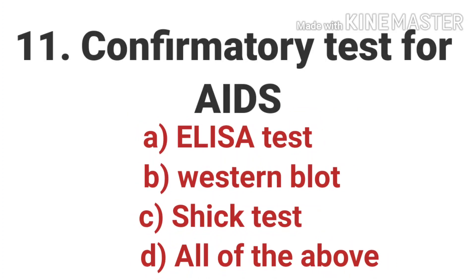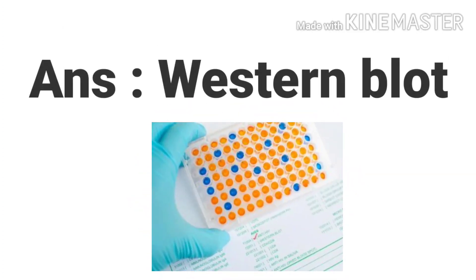The eleventh question is: what is the confirmatory test for AIDS? Options are ELISA test, Western blot test, Schick test, and all of the above. The answer is Western blot test.